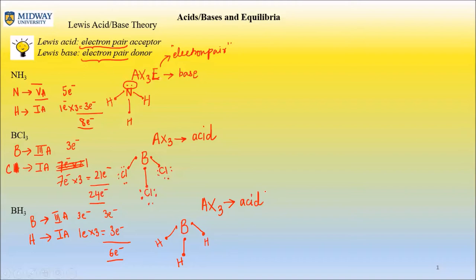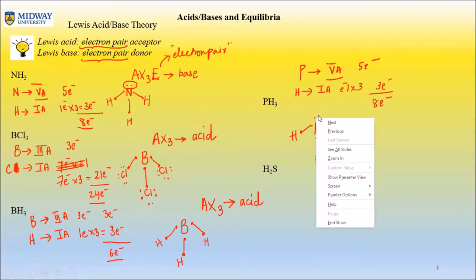PH3. Phosphorus is in group 5A so it's got five valence electrons. Hydrogen is 1A, so it's got one electron times three, so it's three electrons total - eight electrons. Then phosphorus is the least in number, it goes at the center. So it's got three electrons, and hydrogen, hydrogen, and hydrogen. Well we had five, you only used three to bond the phosphorus with the hydrogen, so we're left with a pair. We got an electron pair so it's AX3E. Whenever you have an E it's an automatic base. So PH3 is a base.